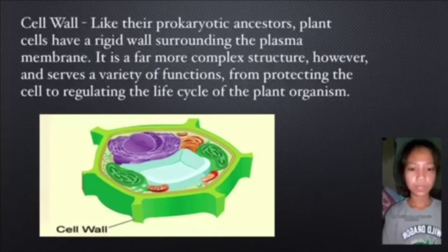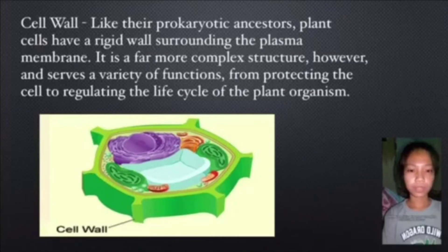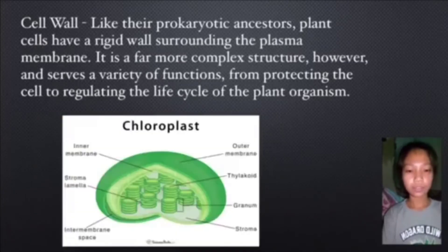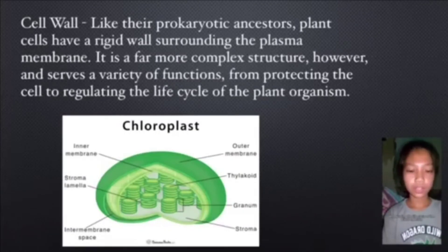Cell wall. Like their prokaryotic ancestors, plant cells have a rigid wall surrounding the plasma membrane. It is a far more complex structure, however, and serves a variety of functions, from protecting the cells to regulating the life cycle of the plant organism.